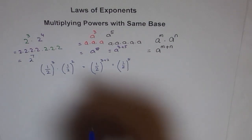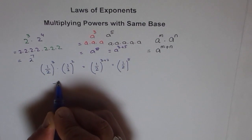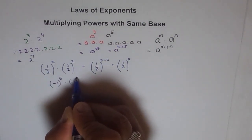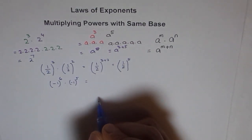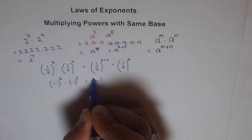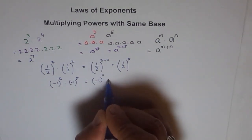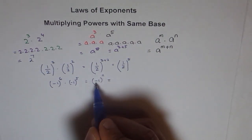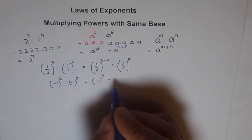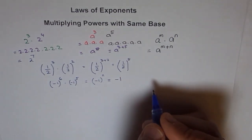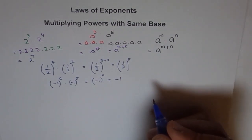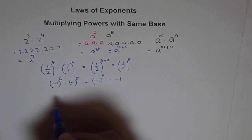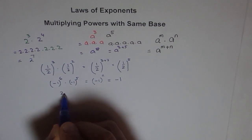If we have minus one to the power of six times minus one to the power of five, then we should expect minus one to the power of eleven. And if we want to calculate what that is — when the power is odd, the result will be negative, so effectively we get minus one in this case.